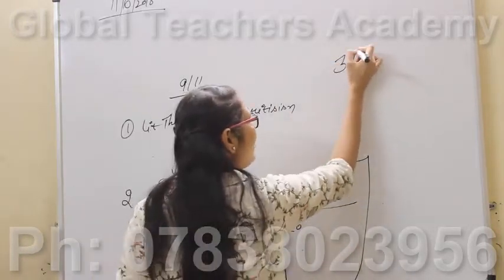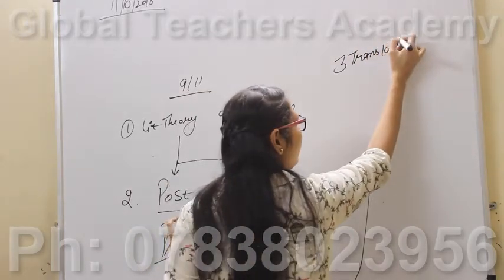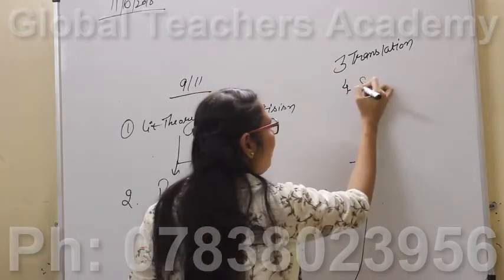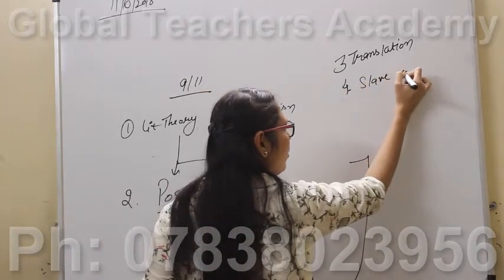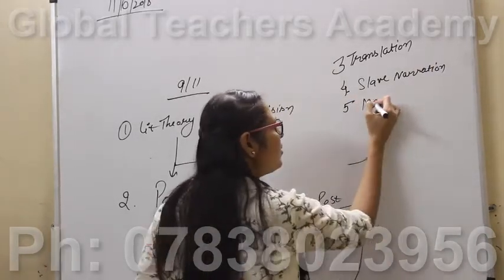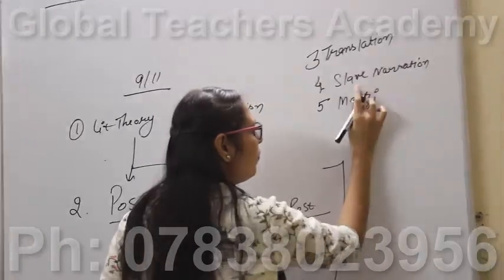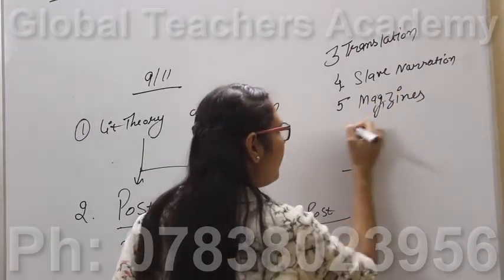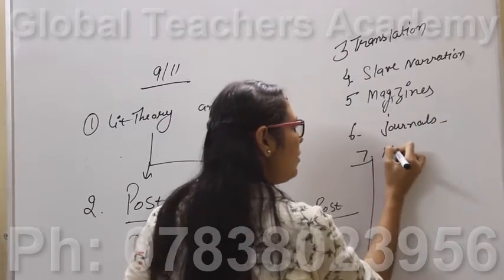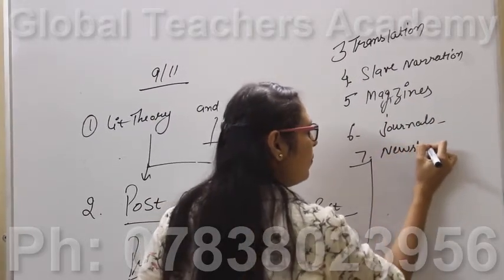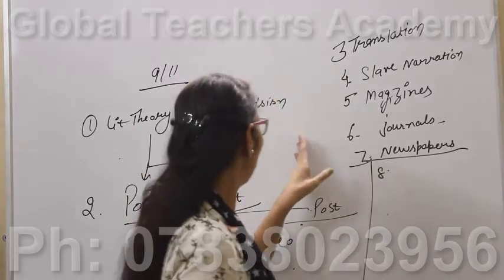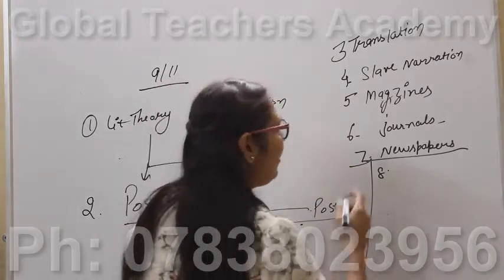After that we move to translation theory. After translation, we have to give our attention to slave narration. If we start to divide the parts, we have magazines, journals, and newspapers. Another one is very important from the point of view of our paper, so we must give it importance too.